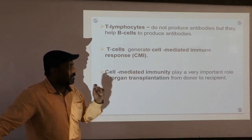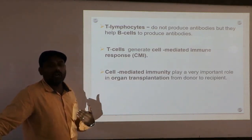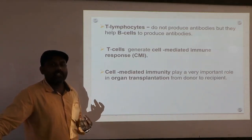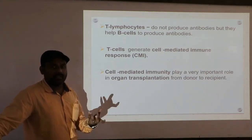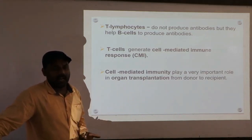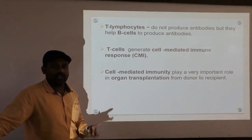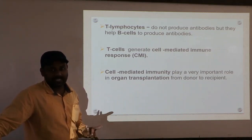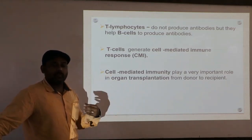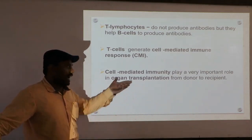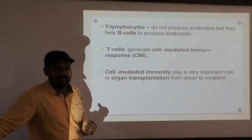Cell-mediated immunity plays a very important role in organ transplantation — from donor to recipient. When a person has a damaged kidney, heart, eyes, or liver, the cure is to transplant an organ from a donor. During transplantation, blood group matching and tissue matching are performed. T-lymphocytes are responsible for the matter of rejection — if matching is not possible between donor and recipient, T-lymphocytes play a very important role in graft rejection.